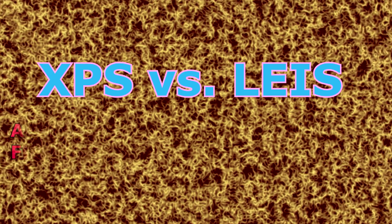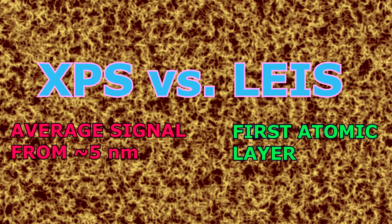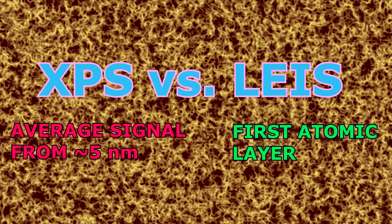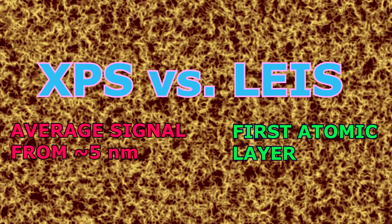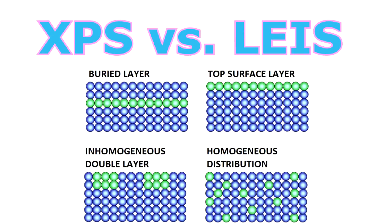Some of you may know that photoelectron spectroscopy is also very surface-sensitive, but the truth is that it still integrates the signal over a few nanometer depth, so all these four cases would result in an identical signal for XPS. However, for low-energy ion scattering spectroscopy, these samples are clearly different and can be studied with unprecedented detail.